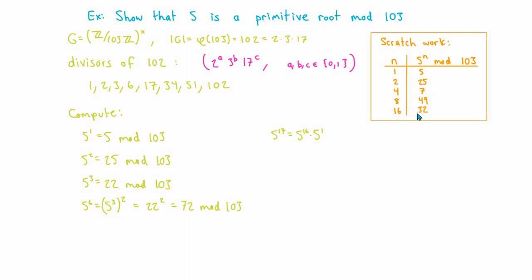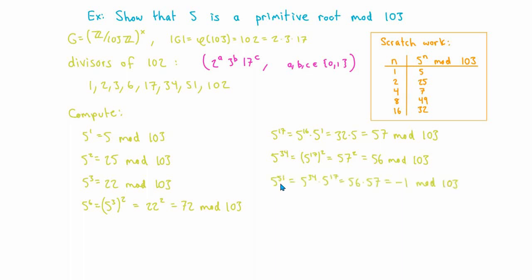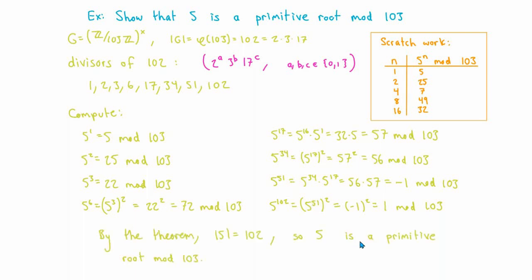Successively squaring, we compute 5 to the 1st, 5 squared, 5 to the 4th, 5 to the 8th, and 5 to the 16th modulo 103. Combining 5 to the 16th and 5 to the 1st, we find 5 to the 17th is 57 modulo 103. Then 5 to the 34th is 57 squared, which is 56 modulo 103. And 5 to the 51st equals 5 to the 34th times 5 to the 17th, which is negative 1 modulo 103. At this point we can stop — since 5 to none of the proper divisors of 102 equals 1 modulo 103, the order of 5 must be 102, so 5 is a primitive root modulo 103.